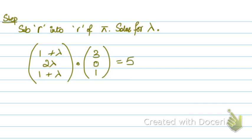Now you dot the two r's and you solve for lambda. So this will be 3 plus lambda plus 0 plus 1 plus lambda equals to 5. Just this, 1 plus lambda. So this will be 2 lambda equals to 5 minus 4 is 1. So you get your lambda as 1 upon 2.